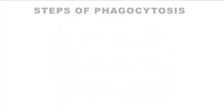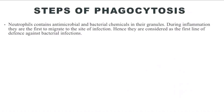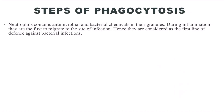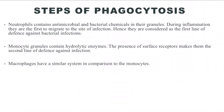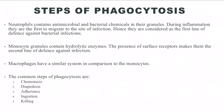Neutrophils are known to be the first line of defense against bacterial infections. They contain granules capable of bacterial and antimicrobial functions. Monocytes contain hydrolytic enzymes and function as the second line of defense. Macrophages function similar to that of monocytes.